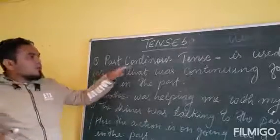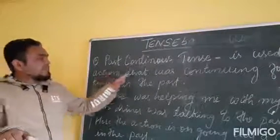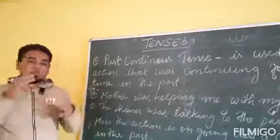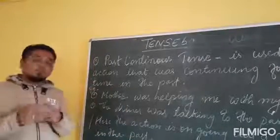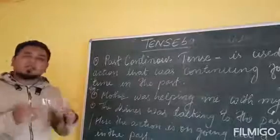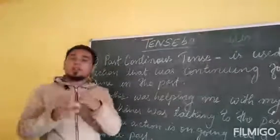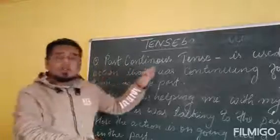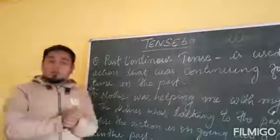Next, we have past continuous tense. Past continuous tense is used for an action that has been continuing for quite some time — the action is ongoing until a certain time in the past. So past continuous tense means the action is continuing from the past till a certain time. This kind of sentence is known as past continuous tense.